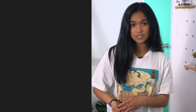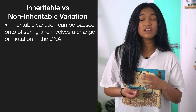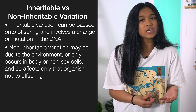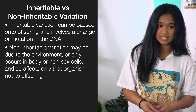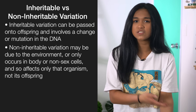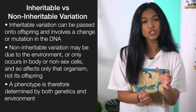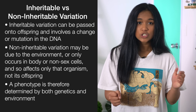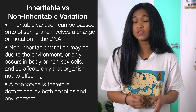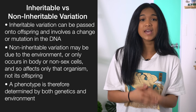Another commonly asked question is the difference between inheritable and non-inheritable variation — basically, when is a change in phenotype passed down to offspring? Inheritable variation can be passed down and involves a change or mutation in the DNA. Non-inheritable variation may be due to the environment or may only occur in non-sex cells, so it only affects that organism and won't be passed down. For example, if you get a scar on your arm. A phenotype is therefore determined by both genetics and the environment — just because an individual has a gene or allele that codes for a specific trait doesn't necessarily mean their phenotype will express it.